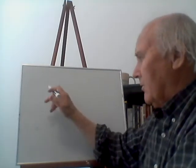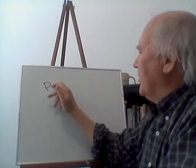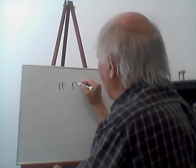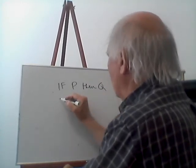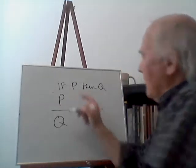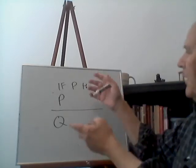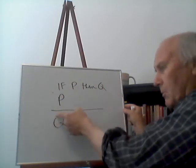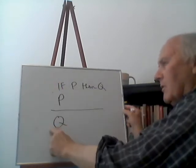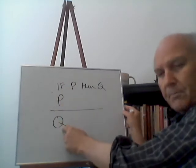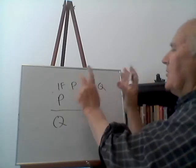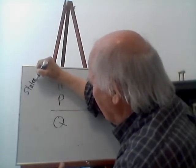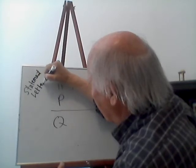There are a couple of forms you really need to know when talking about deductive arguments. One of the forms is this: if P, then Q. P. Therefore Q. P and Q stand for statements — they're called statement letters because they stand for statements. Any argument that has the form 'if P then Q, P, therefore Q' — if the premises are true, then the conclusion has to be true.